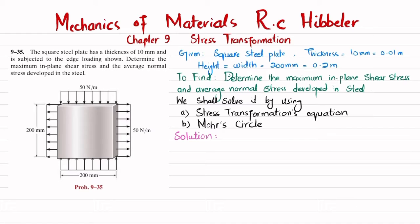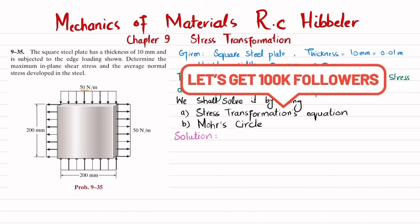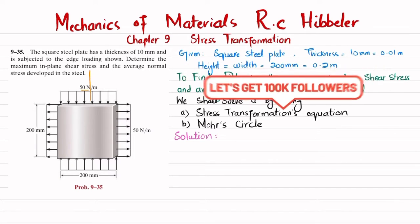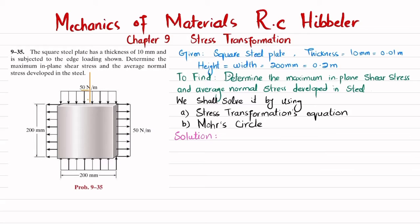You can see this is a uniformly distributed load of 50 Newton per meter. When you convert this load into a point load, you multiply 50 Newton per meter by the length, which is 200 mm or 0.2 meters. That gives you a 10 Newton load.